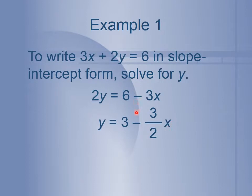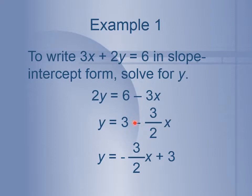Remember that minus stays as well. Now, the slope-intercept form is y equals mx plus b, where the constant appears last. So we're going to use the commutative property to exchange these terms: the negative 3 halves x needs to appear first, and then the 3 needs to appear second. So we rearrange the terms using the commutative property.